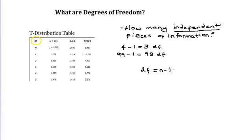Why do we subtract one from the number of items? Another way to look at degrees of freedom is that they are the number of values that are free to vary in a data set. What does free to vary mean?